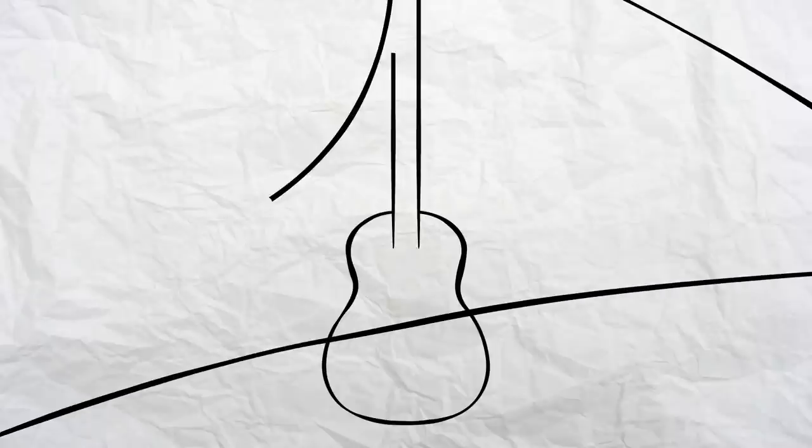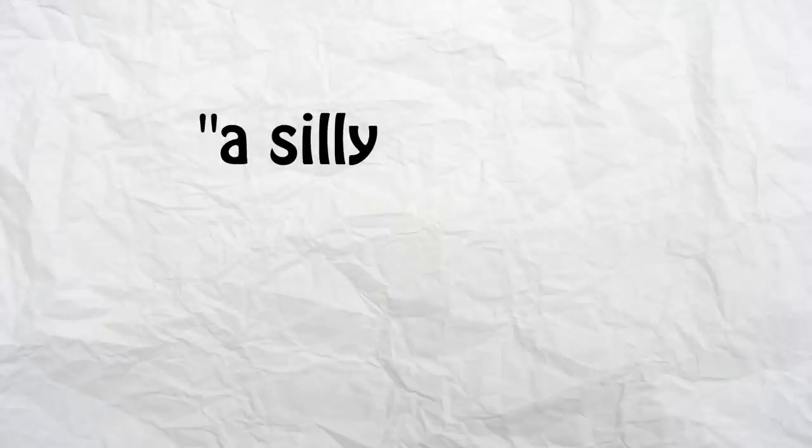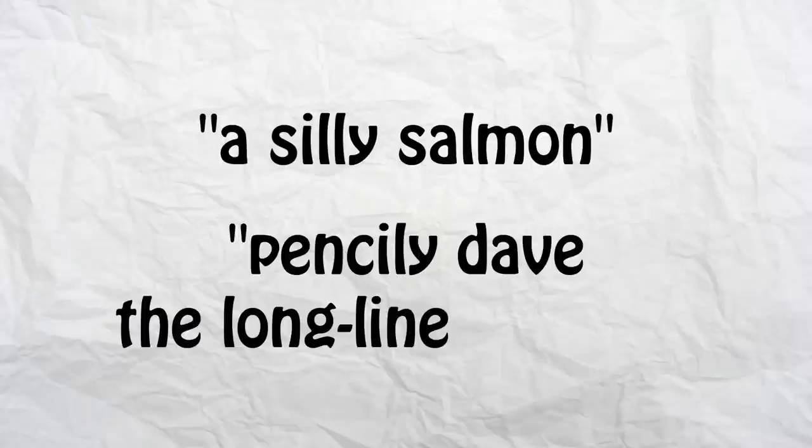Step 2: Draw the neck or finger shaft. Draw two long parallel lines starting just below the top of the body like so, but always remember to stop, or you might end up drawing a line literally forever and your friends will make fun of you and call you nasty things like a silly salmon or pencily Dave the long line bastard.